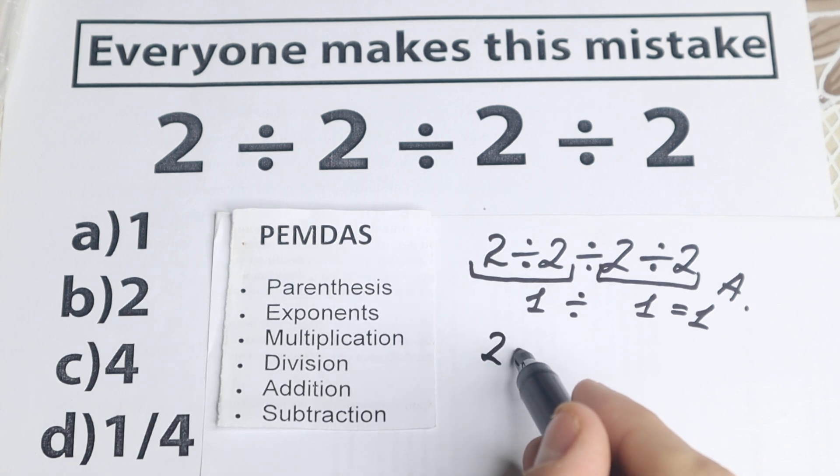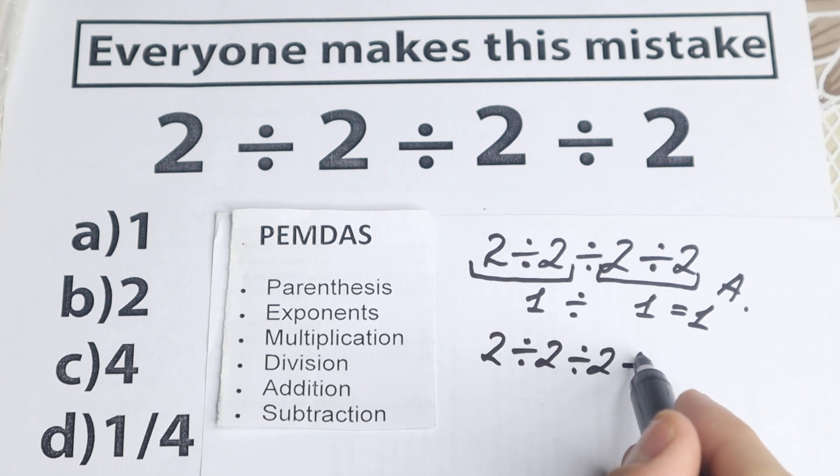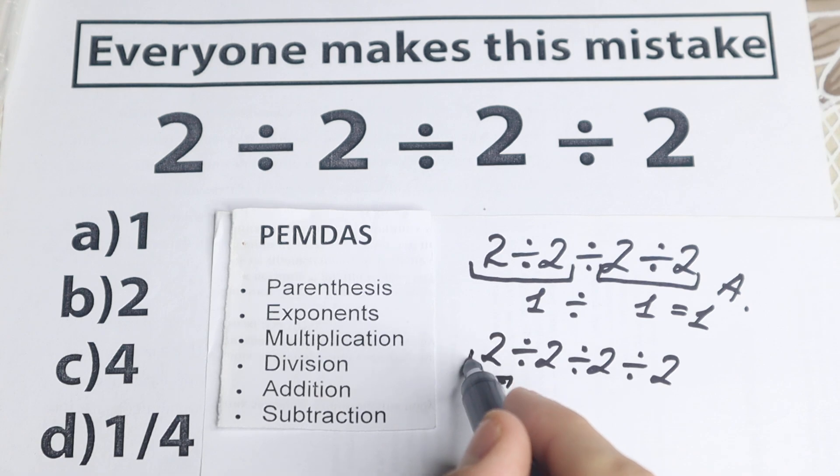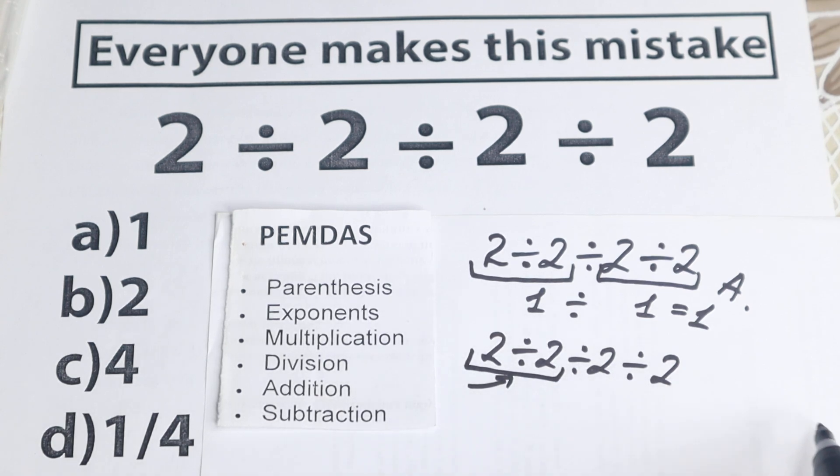And now we rewrite our problem, 2 divided by 2, divided by 2, and divided by 2. So we have division right now. And now we need to scan what is the first sign from left to right. Right now we are scanning, the first sign from left to right is this division. So we need to divide at first these 2 divided by 2.